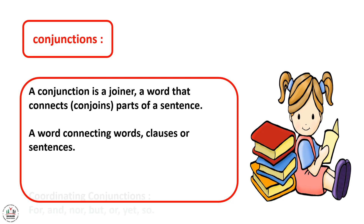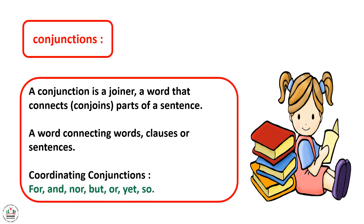Coordinating conjunctions are: for, and, nor, but, or, yet, and so. We can also call them FANBOYS — for, and, nor, but, or, yet, and so.